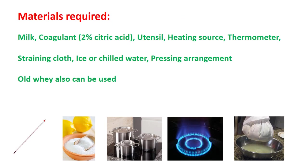Here we will see the materials required for making paneer. First is the milk, then the coagulant — a 2% citric acid solution, preferably prepared in warm water. Sometimes lemon juice or old whey can be used for coagulation. For small-scale home preparation we need steel vessels, a heating source, thermometer, straining or muslin cloth, chilled water, and a pressing arrangement such as a board near a sink. For the industry, it is done in a large steel rectangular vessel where heating, coagulation, and draining through a bottom outlet are all performed.